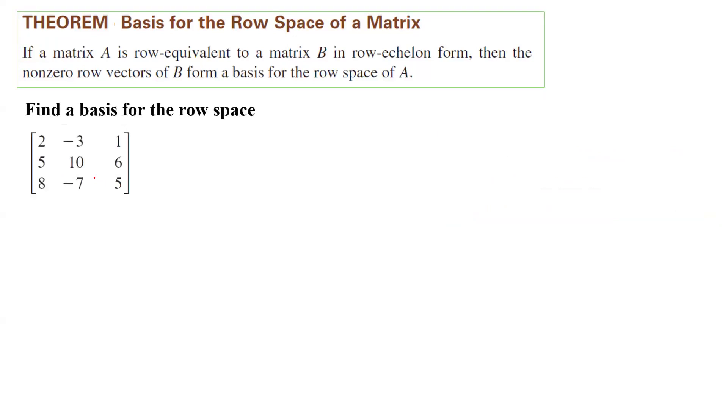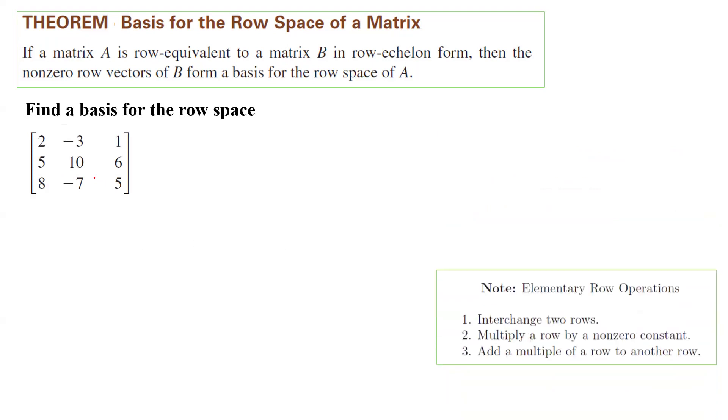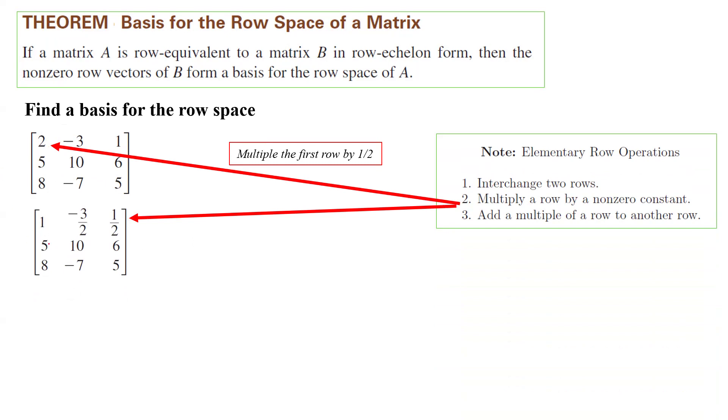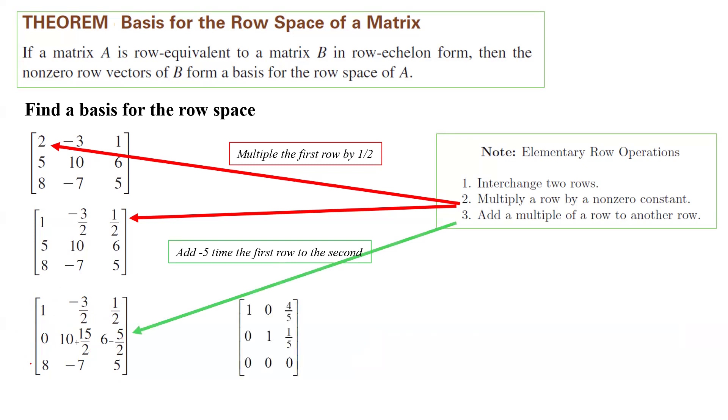Next example. You have a three by three matrix. We're going to apply what we learned before, elementary row operations to reduce this guy. The pivot is 2, which should be 1. So what you can do, you can multiply the first row by a half or divide the first row by 2. You end up with 1, negative 3 halves, and a half. Everything below 1 must be zero. So first deal with 5. You can multiply the first row by negative 5 and add it to the second row. And the second row is 0, 10 plus 15 over 2, 6 minus 5 over 2. Then you can deal with the third row. You can multiply the first row by negative 8 and add it to the last row. And eventually reducing this matrix gives you a new matrix with two non-zero rows and one zero row.